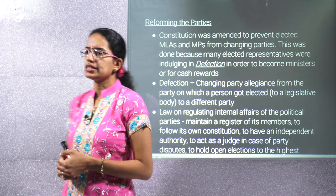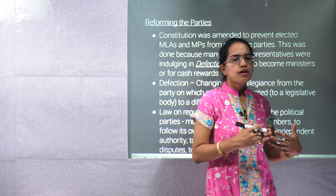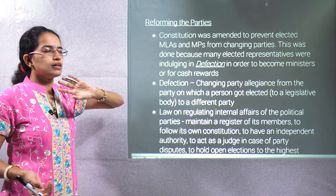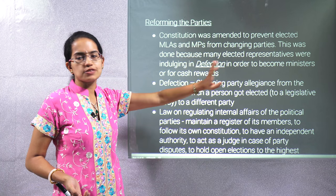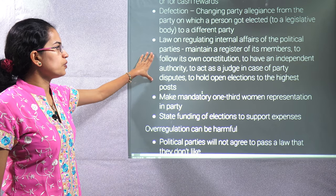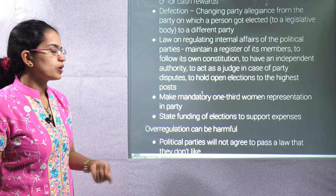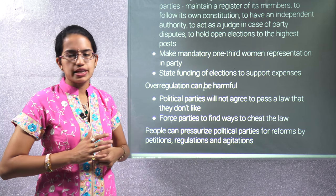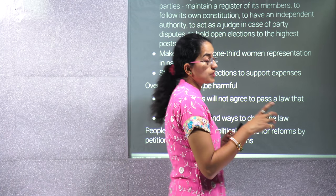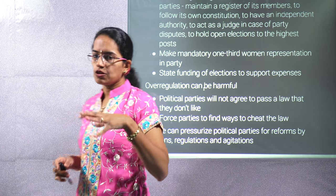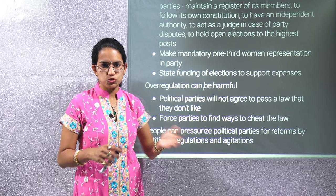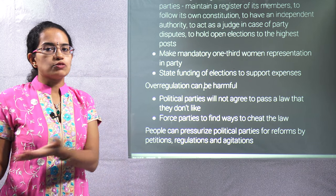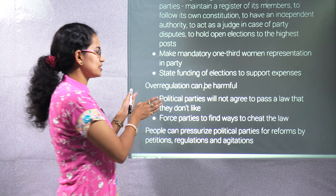When reforming political parties, defection is a major issue — a winner switches to another party for money. The anti-defection law was introduced through a constitutional amendment to prevent MPs and MLAs from changing their parties. Other proposed reforms include laws to regulate the internal affairs of parties, making it mandatory for one-third of women to participate, and providing state funding of elections. However, over-regulation can be harmful as parties would find alternate ways to circumvent or simply not pass such laws.